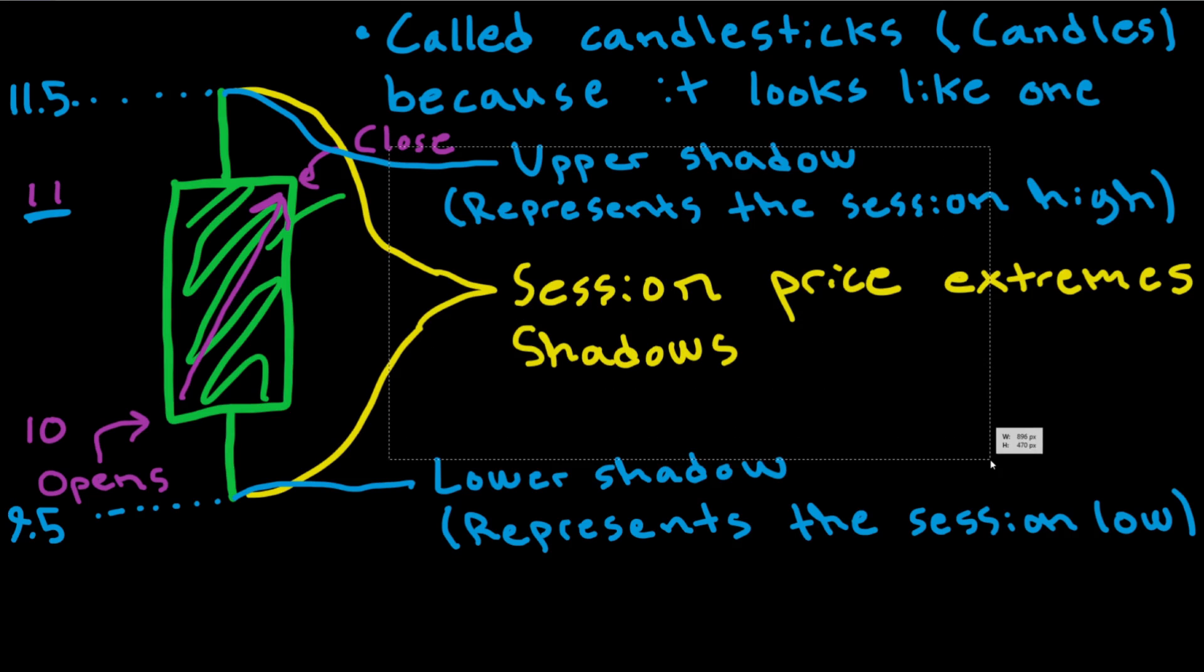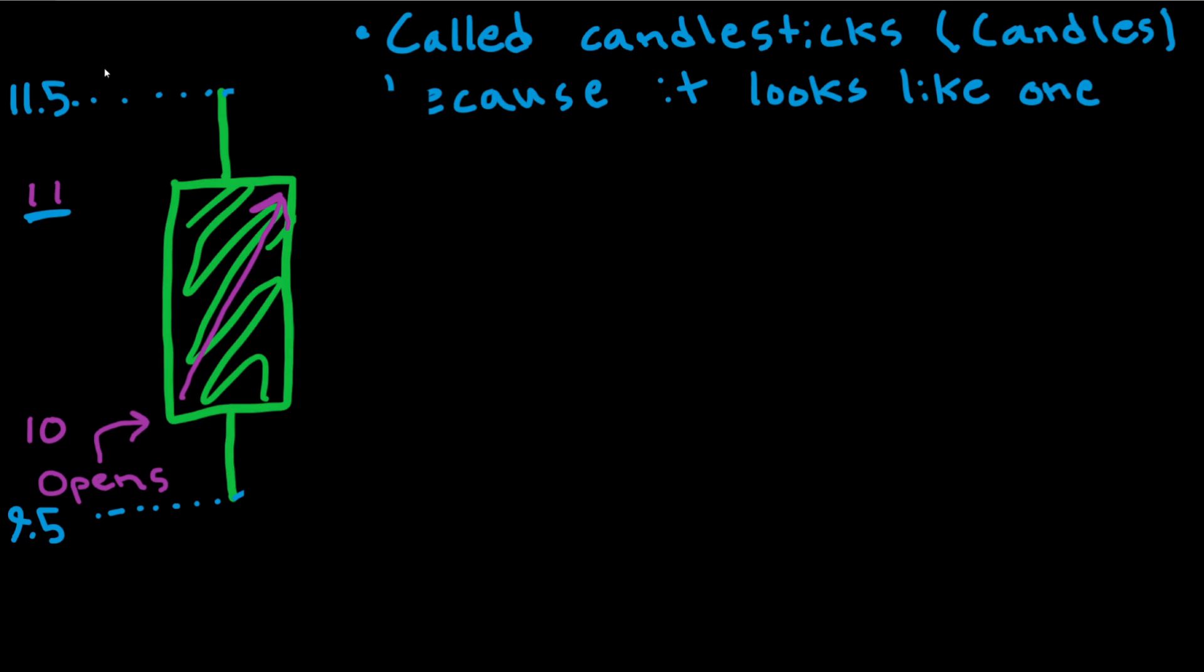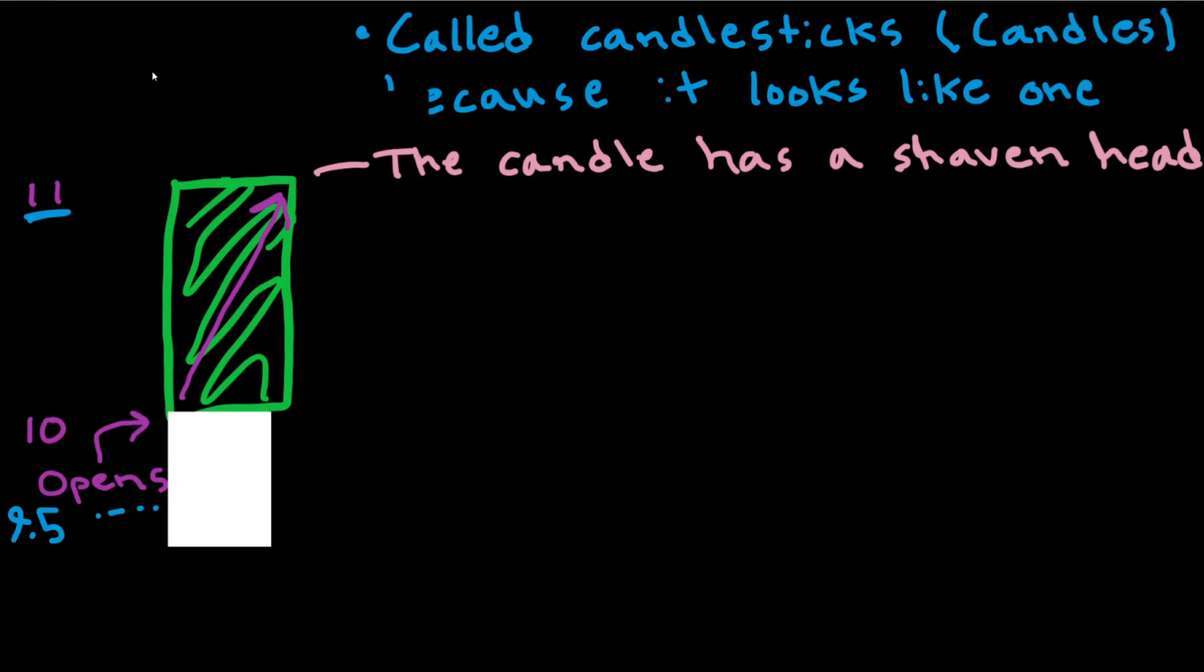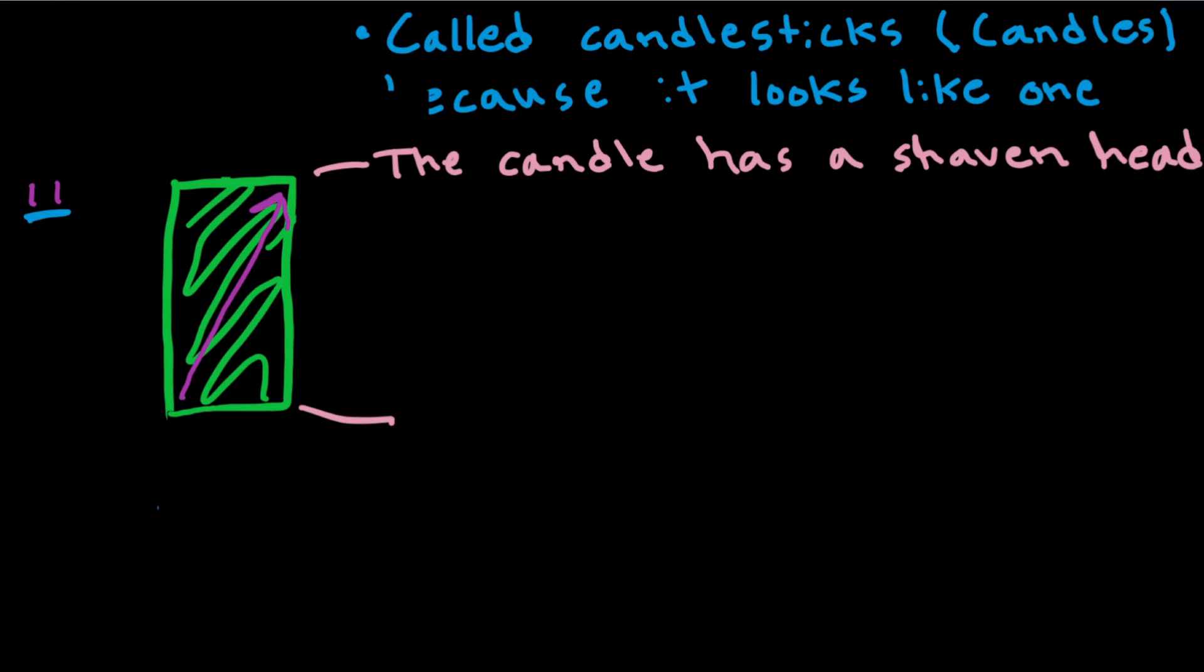We're going to learn some more things here. Alright, so now we're going to take a look at some special cases. If the real body has no upper shadow, so let's delete the upper shadow here, then we say that the candle has a shaven head. So no upper shadow means, and it also has an opposite here. If the candle has no lower shadow here, then the candle has a shaven bottom. And yeah, now I think it's time to look at some real life examples of how to read candles.